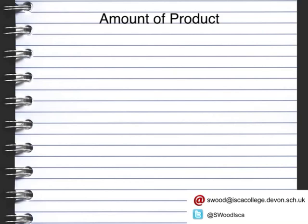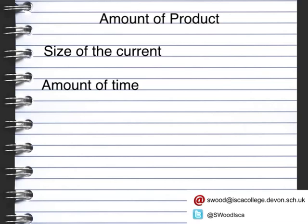The amount of product that you produce relies on two things. The first is the size of the current. The second is the amount of time. Now, both of these are proportional. So, if you wanted to produce five times the amount, you could either increase your current by five times or increase the amount of time that you do the experiment for by five times.